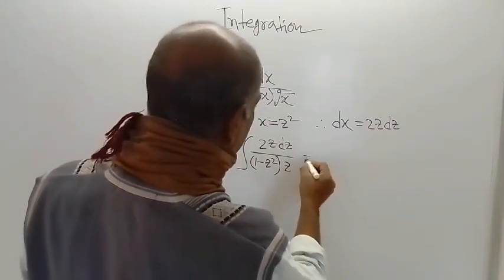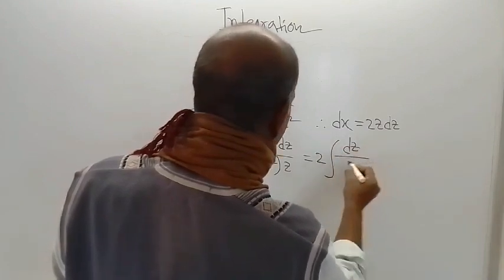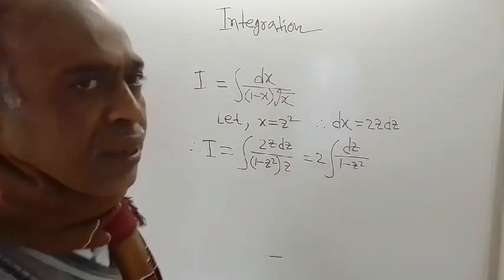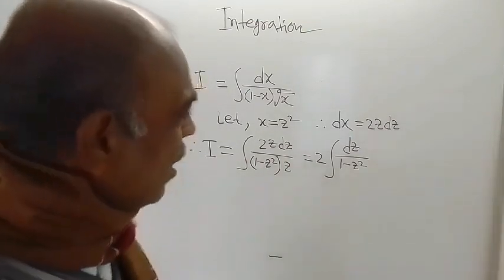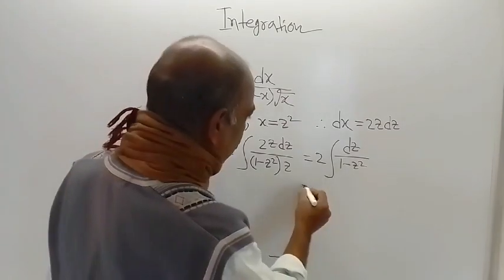So the remaining thing is 2 into integration of dz divided by 1 minus z square. So now it becomes so simple, and formula for this is available.